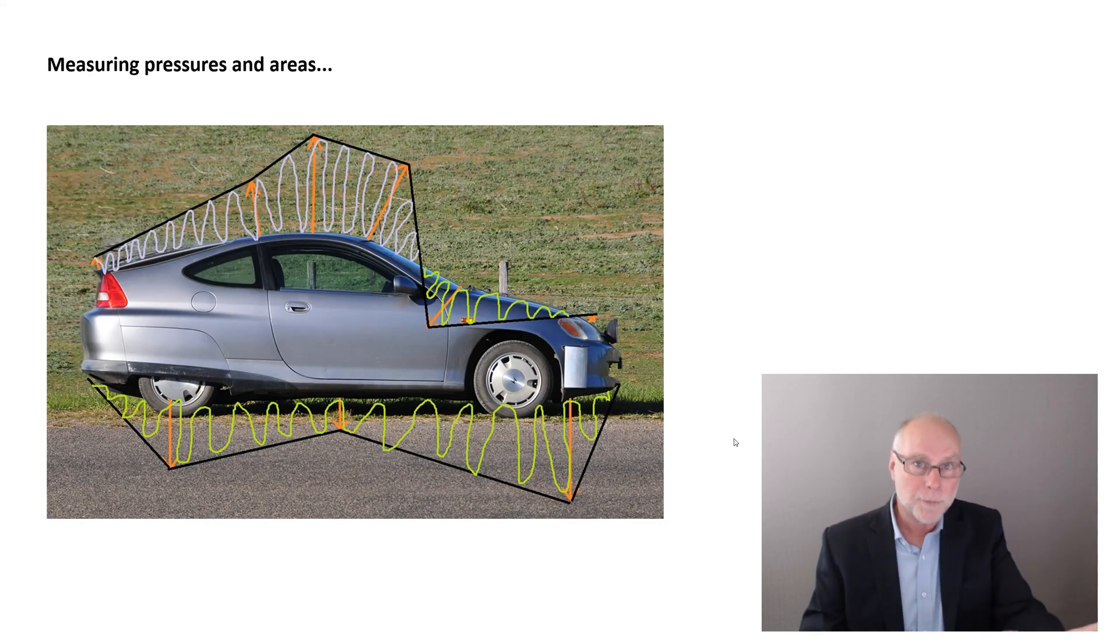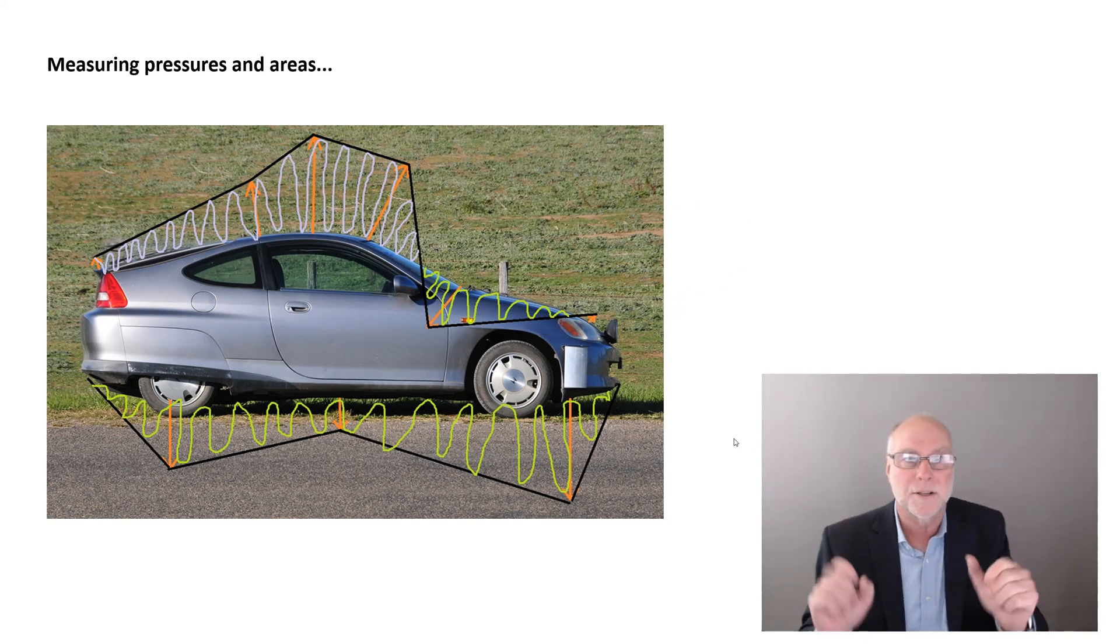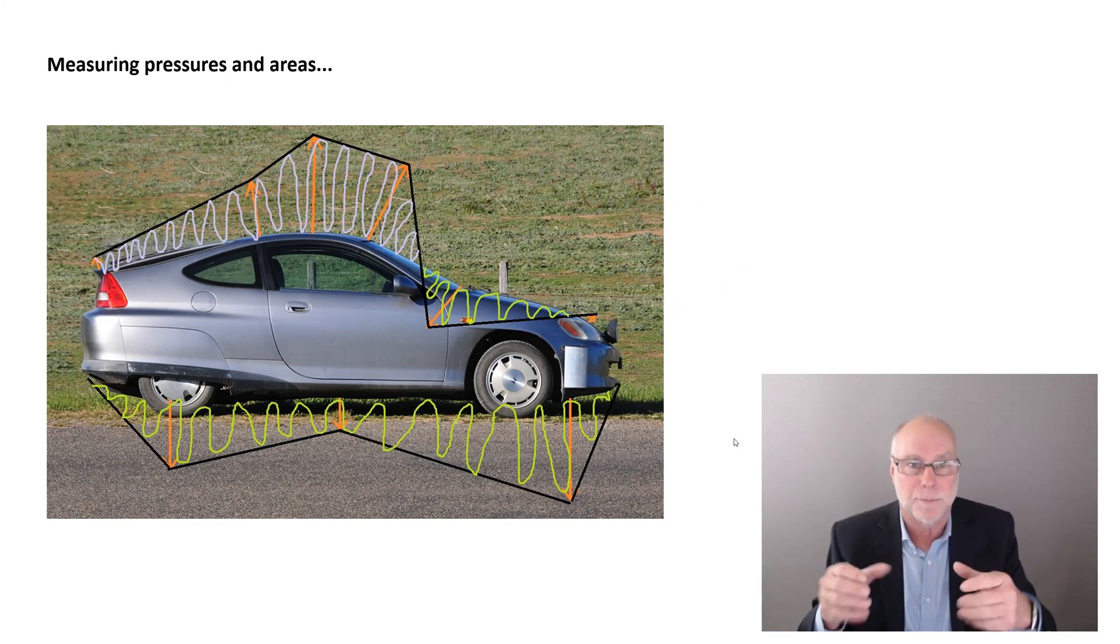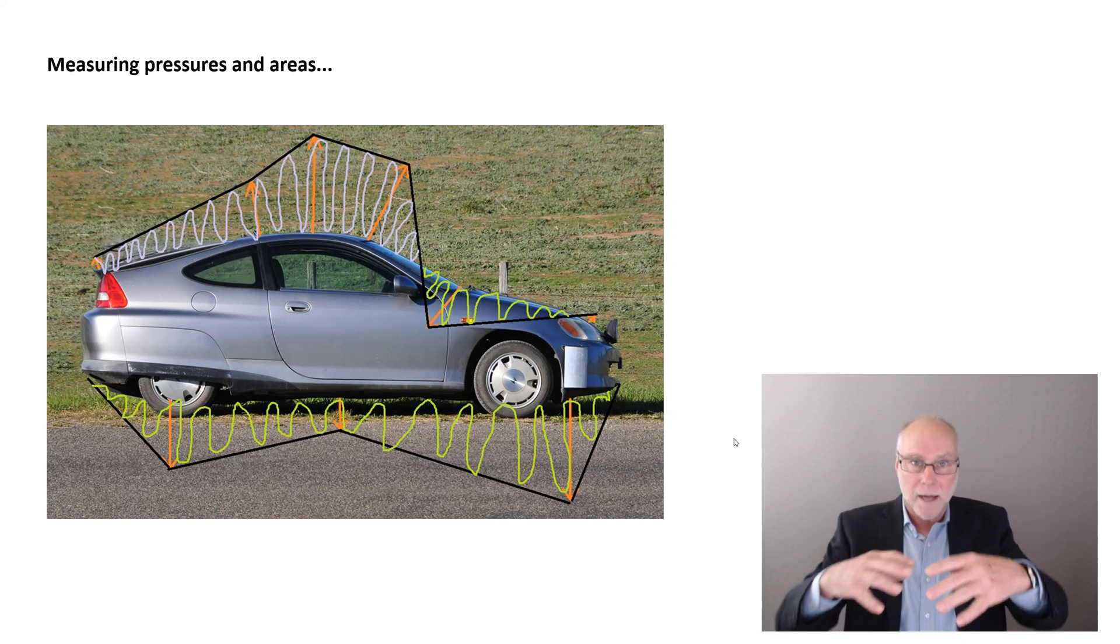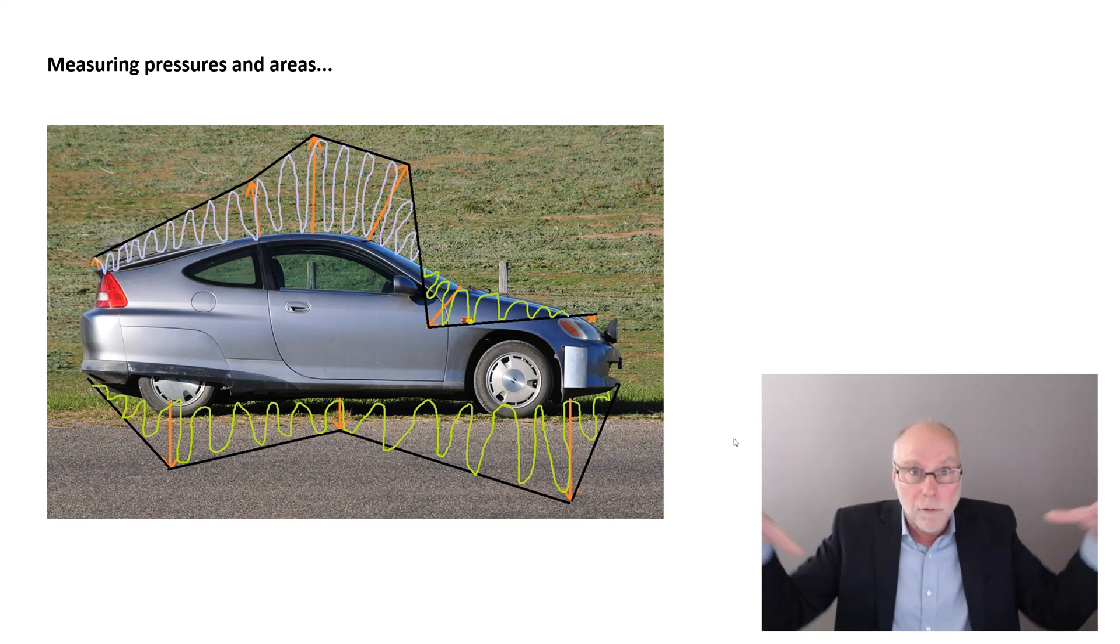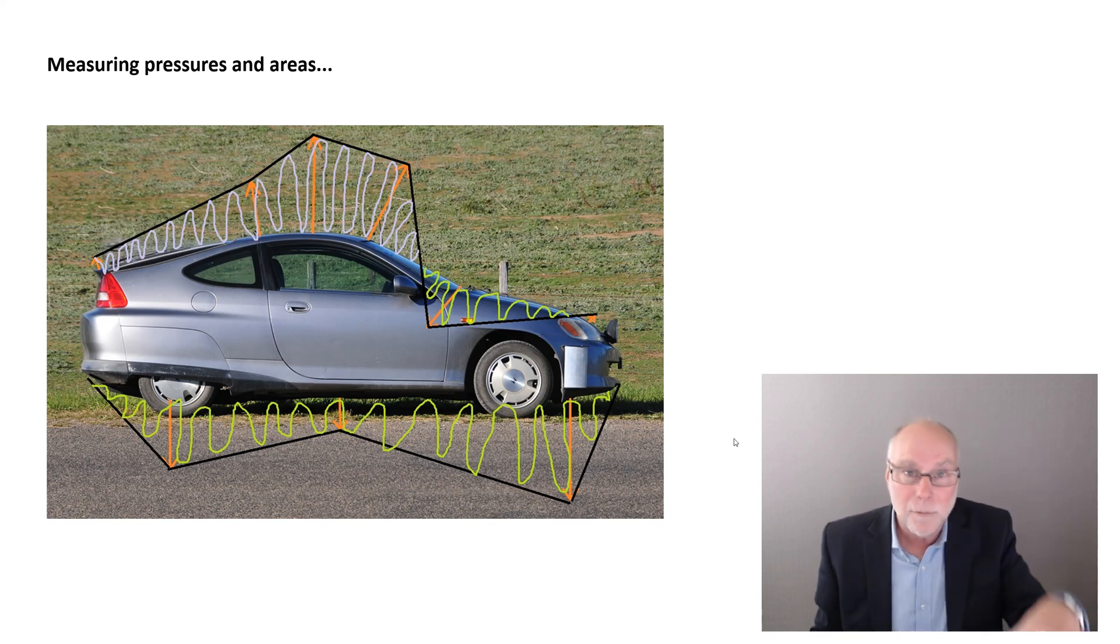The fourth approach is to measure aerodynamic pressures that are acting on the bodywork, look at how big an area each of those pressures is acting on, and then work out if we have a lower pressure overall on top than we do under the car. If we do, the car will develop lift, or a higher pressure overall on top of the car than underneath, in that case, the car will develop downforce. So there were those different techniques. Let's now summarize the advantages and disadvantages of each, and then I'll give you my preferred technique to use.